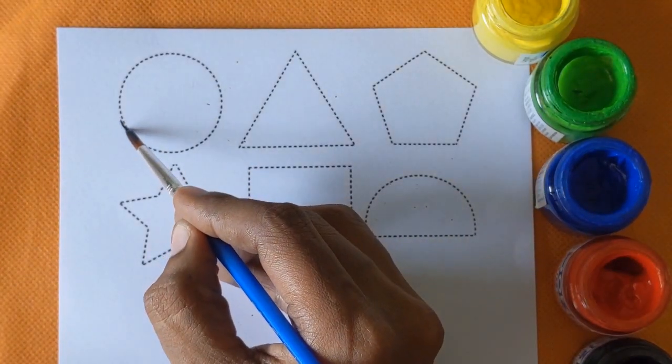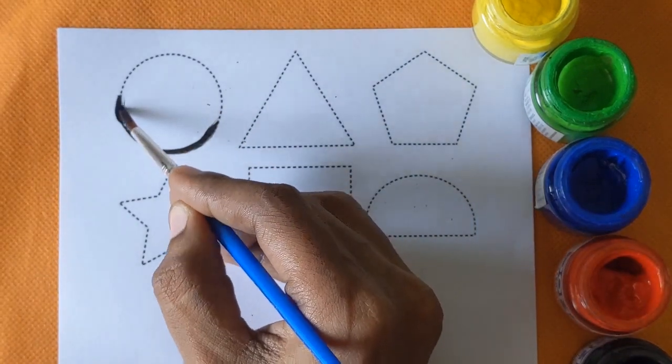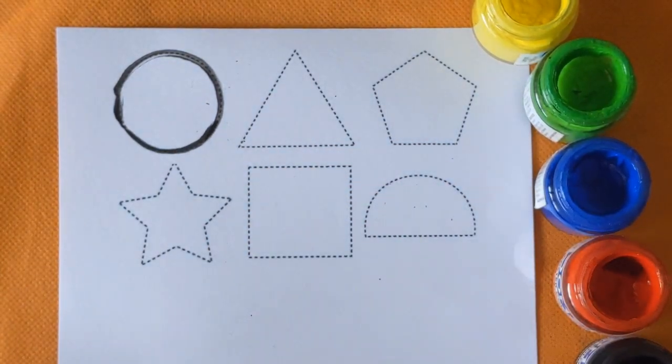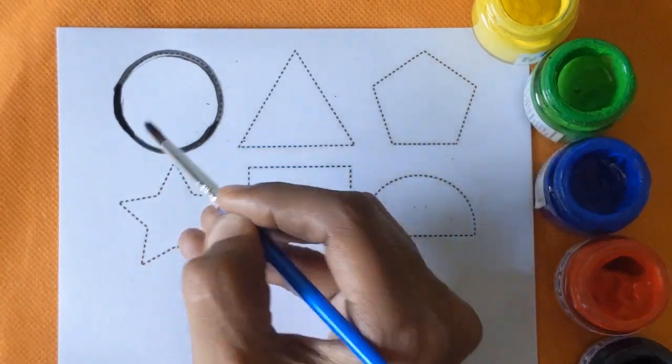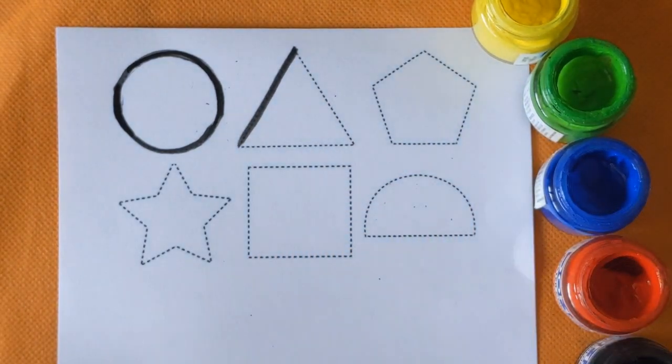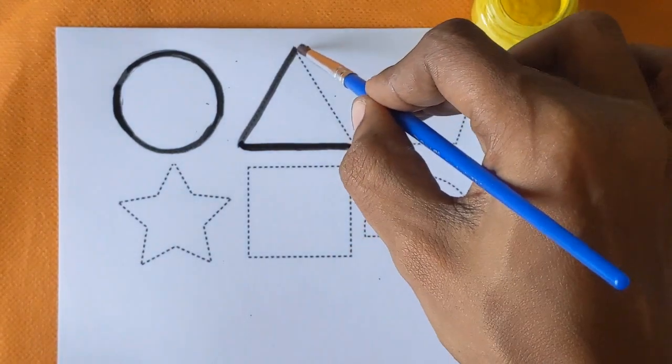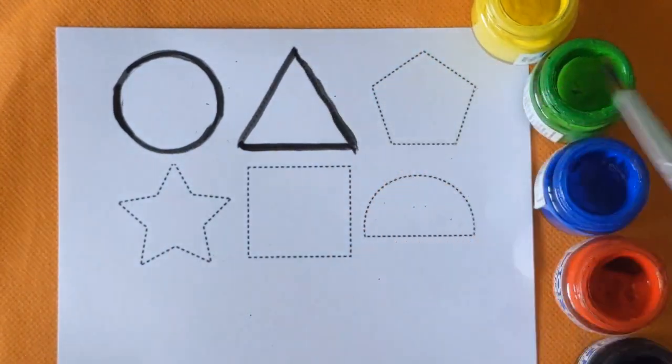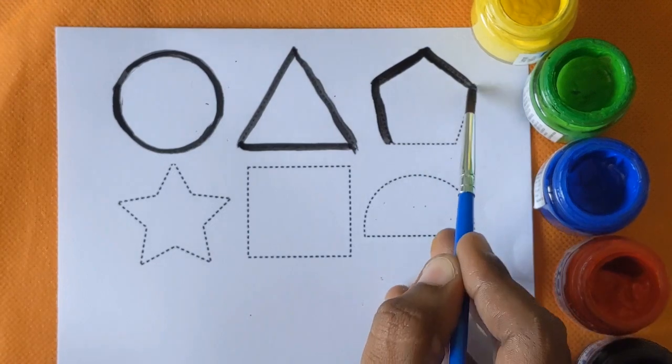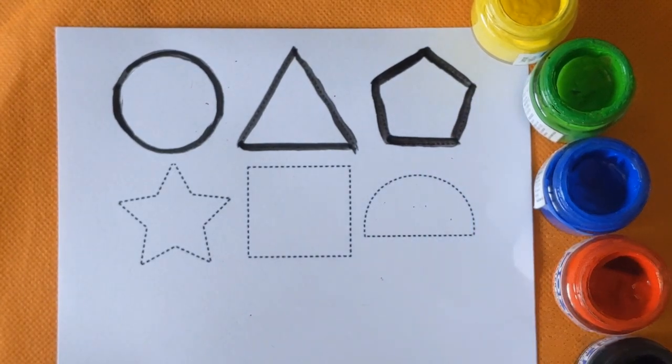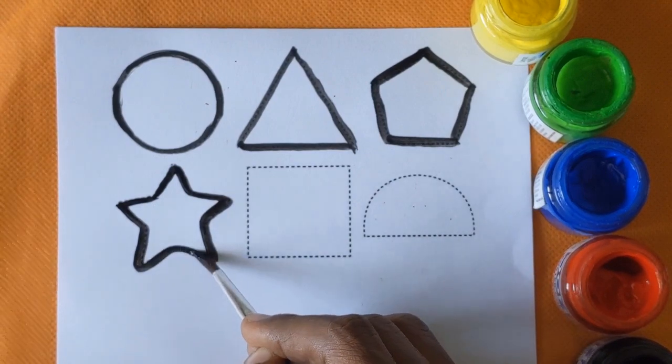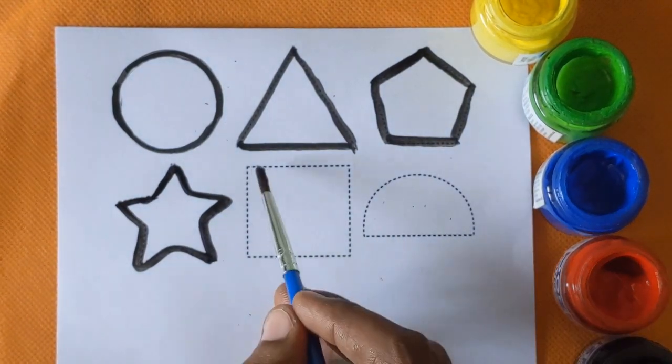This is circle shape. Which shape is this? This is circle shape. Next is triangle.